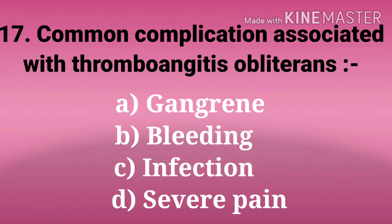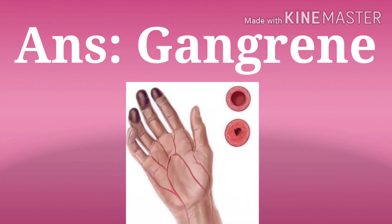Next question: common complication associated with thromboangiitis obliterans. The options are gangrene, bleeding, infection, and severe pain. And the answer is gangrene. In thromboangiitis obliterans, blood vessels become inflamed, swell, and can become blocked with blood clots.